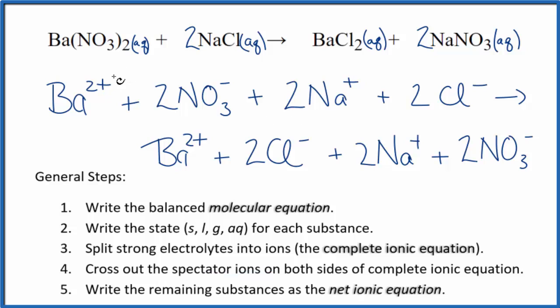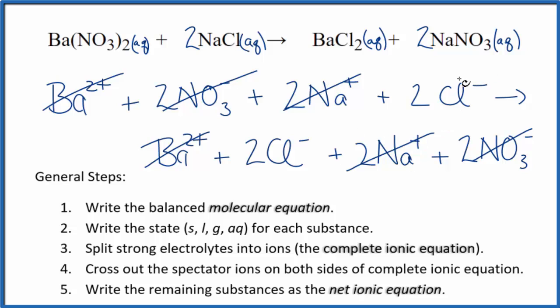I have barium in the reactants — Ba²⁺, the barium ion — I have it again in the products. Two nitrates here and here. Two sodium atoms in reactants and products. Two chloride ions in reactants and products.